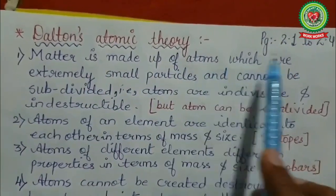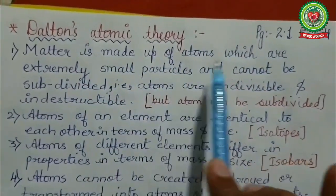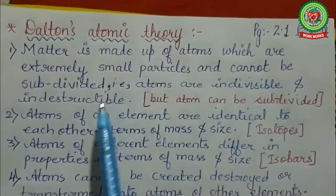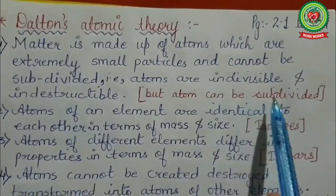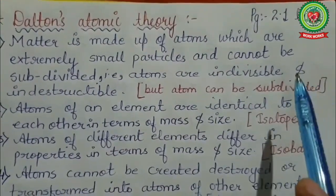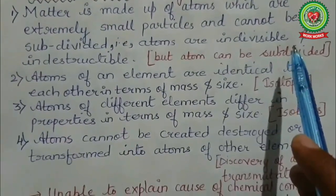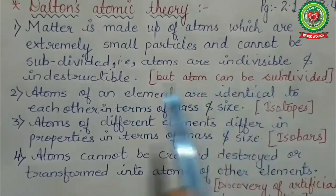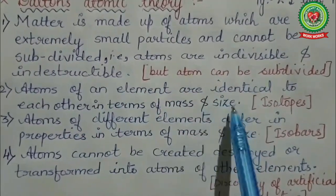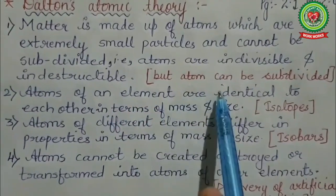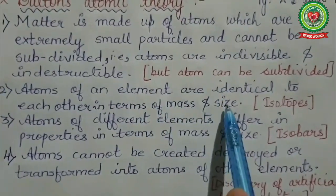Dalton told that matter is made up of atoms which are extremely small particles and cannot be subdivided — that is, they are indivisible and indestructible. But now we know they are subdivided into electron, proton, and neutron. Secondly, he told that atoms of an element are identical to each other in terms of mass and size.